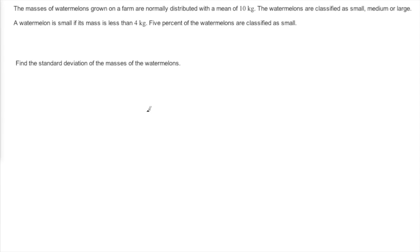The masses of watermelons grown on a farm are normally distributed with a mean of 10kg. The watermelons are classified as small, medium or large.